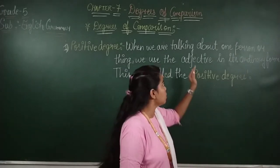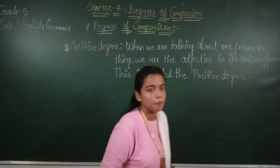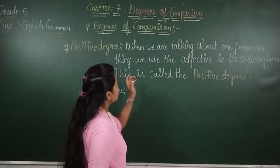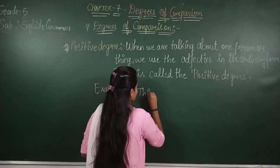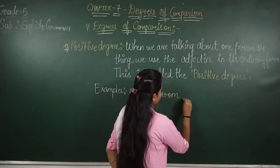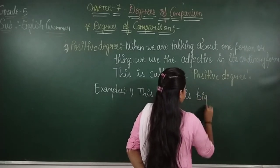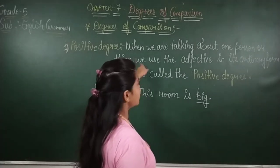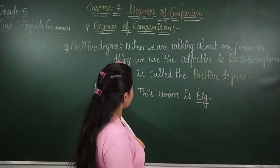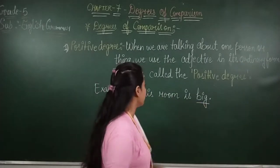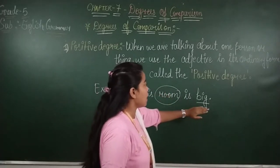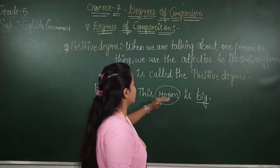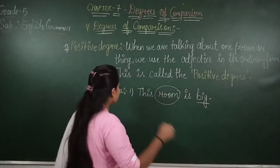Now we will identify how the adjective appears in its ordinary form. Example number one: This room is big. Here, the room is a thing, and 'big' is the adjective used in its ordinary form at the end of the sentence. By this we can identify that it is a positive degree. Now we will see the second example: Amaya is a tall girl.